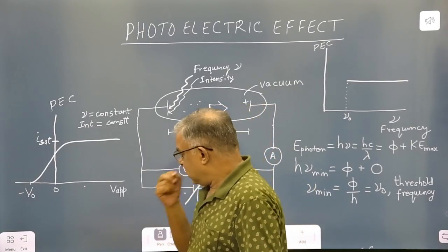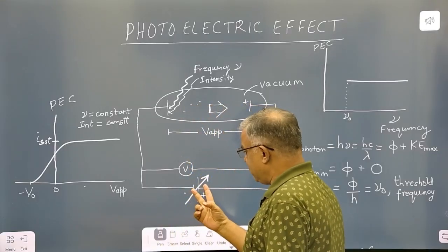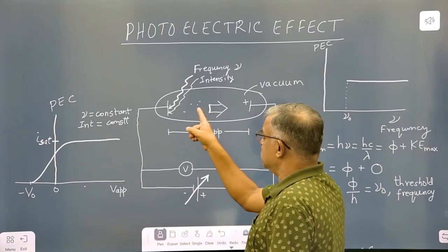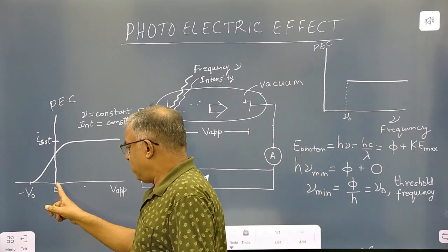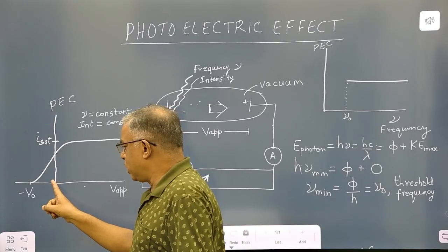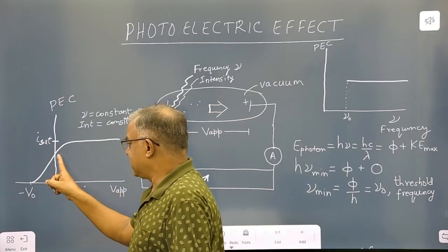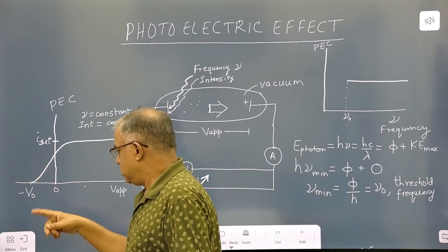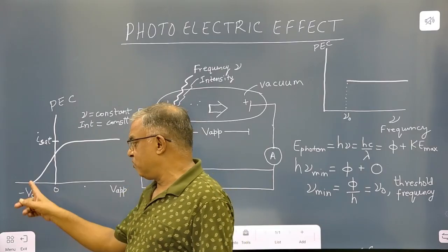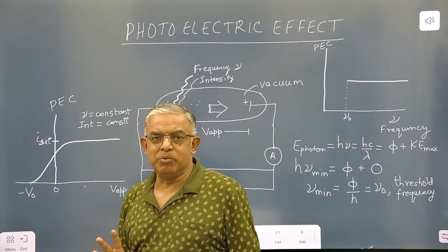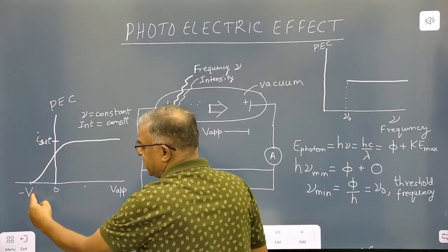When the applied voltage was made negative — meaning the polarity of the battery was reversed — the emitted electrons faced repulsion. As the applied voltage was made more and more negative, fewer and fewer electrons could reach the electrode, so the photoelectric current decreased. For a certain minimum negative voltage V₀, even the most energetic electron was stopped; hence this is called the stopping potential. The two important features of this graph are the saturation current and the stopping potential.